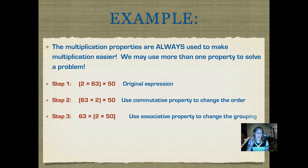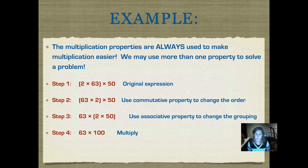Now I'm going to multiply. I multiplied 2 times 50 and wrote that below: 100. Then I took all of the numbers outside of my parentheses and brought those directly down — 63 times 100. Now I can use mental math to multiply them, and it'll be super easy. My answer is 6,300, so 63 times 100 is 6,300.